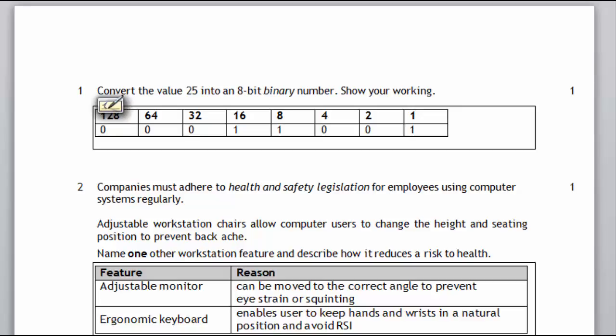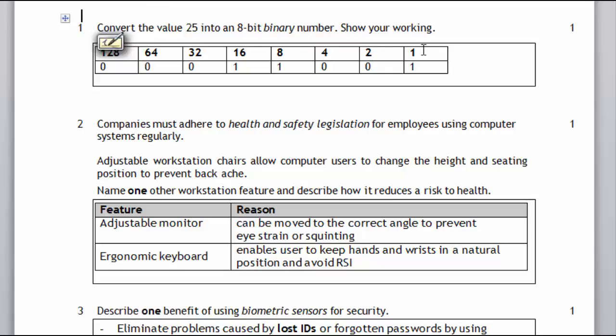Now question 1 is about converting 25 into 8-bit binary. First thing you want to do is remember with 8 bits we start off at units and then it goes 2's, 4's, 8's, etc. up to 128. So it goes up in factors of 2 and that's because there's obviously two different values with binary.